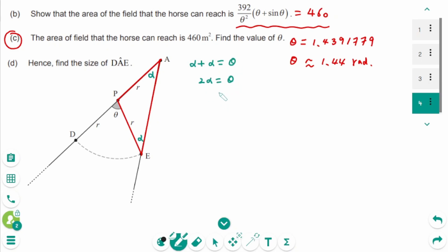Divide by 2 on each side, so alpha equals theta over 2. Then theta equals 1.4391779 over 2 equals 0.719588. So angle DAE equals 0.720.